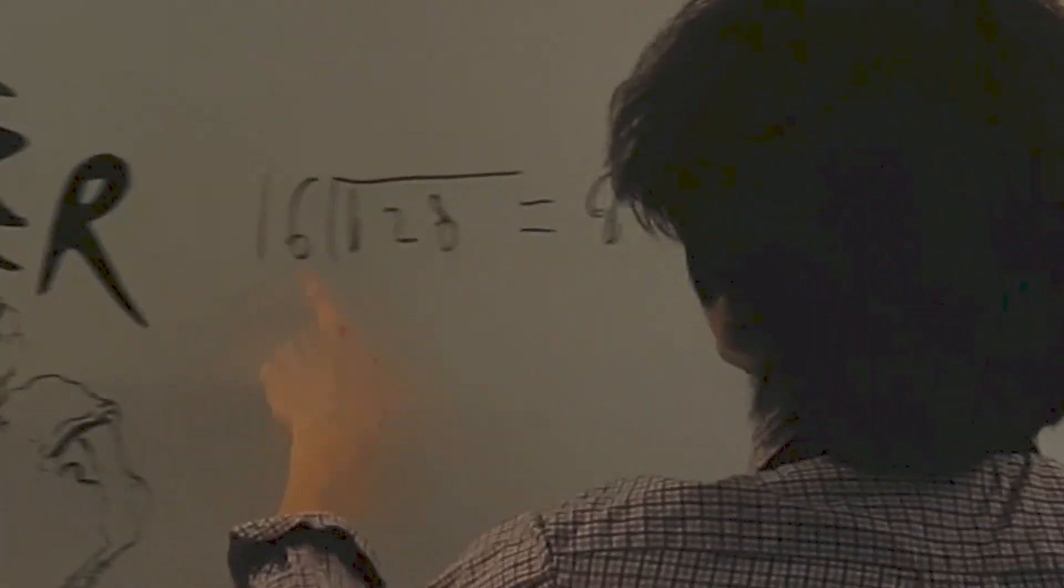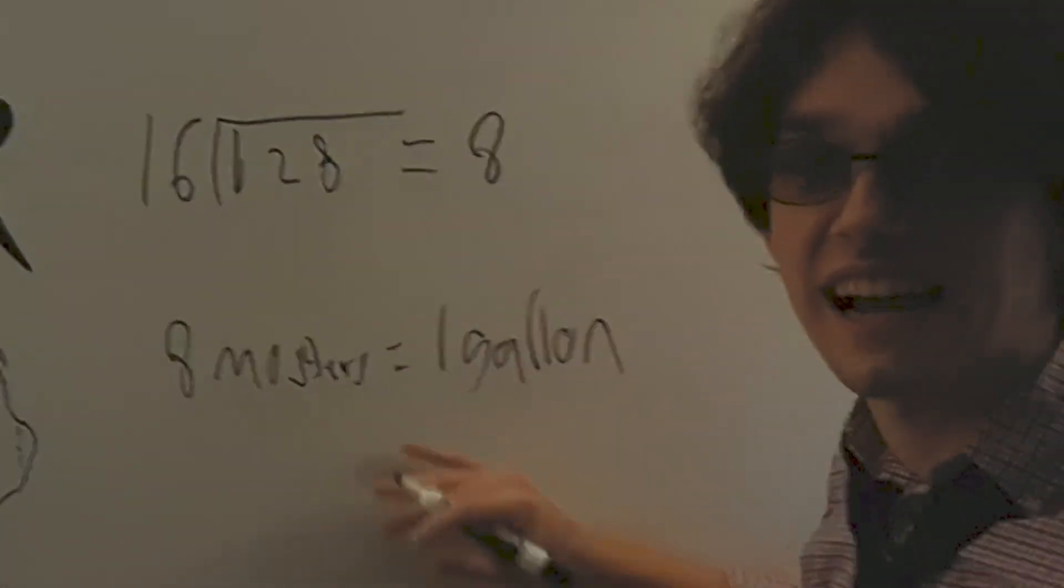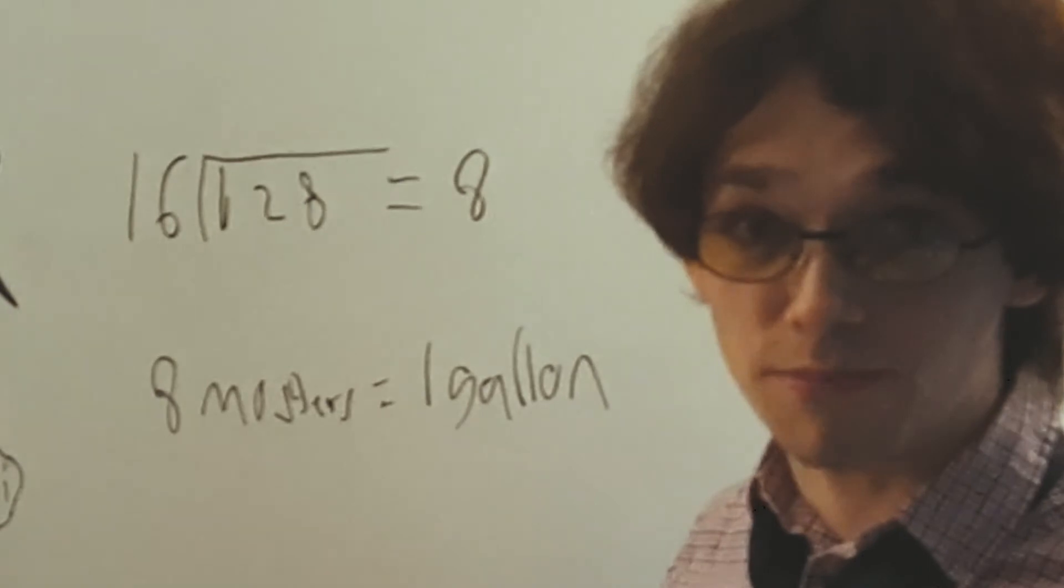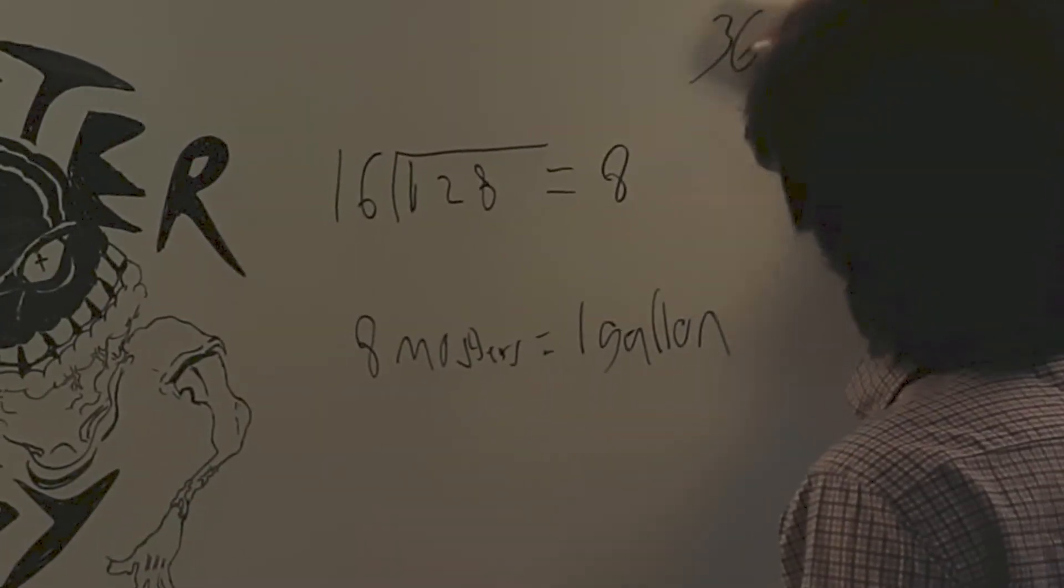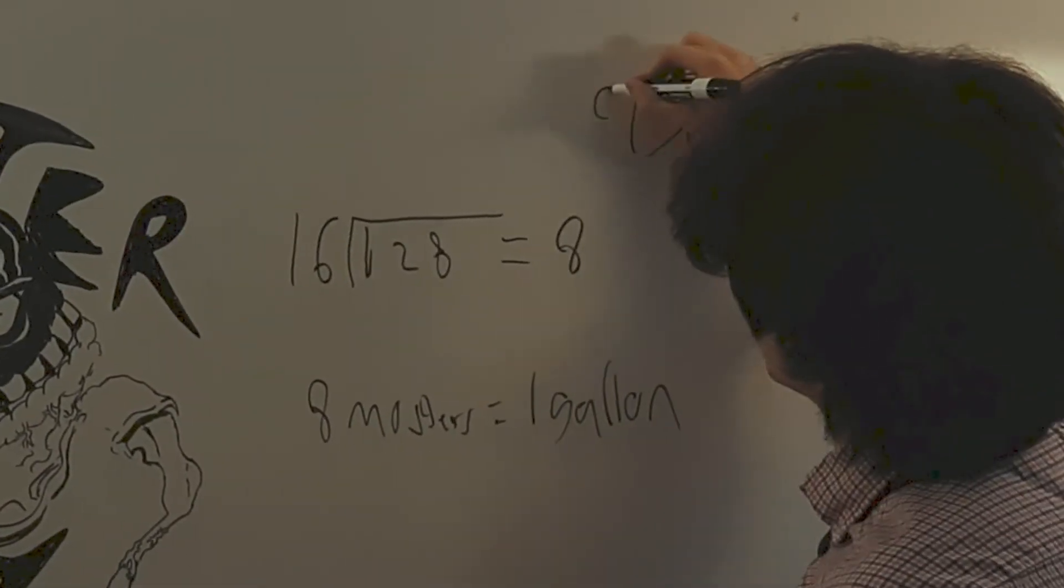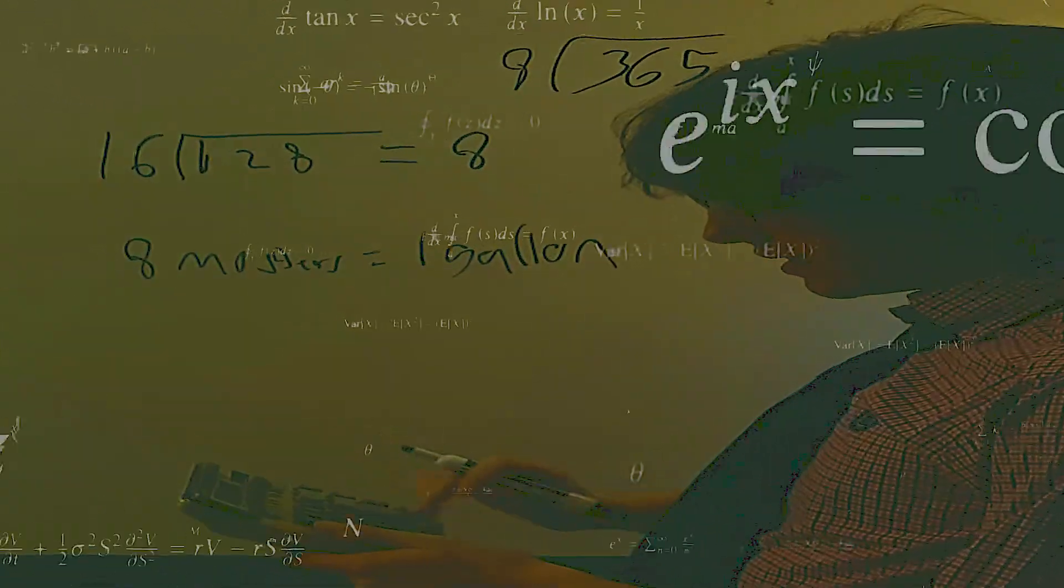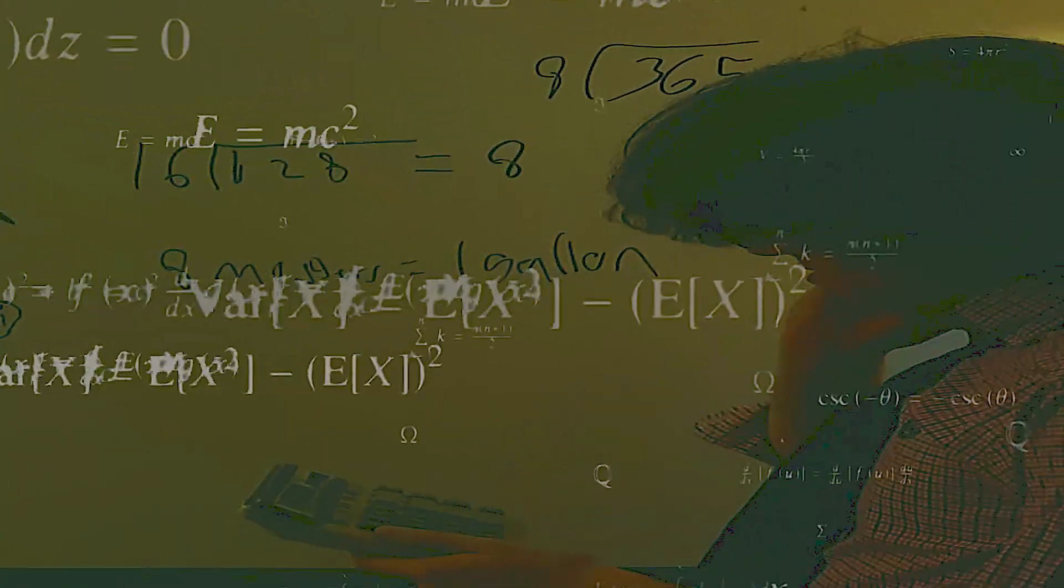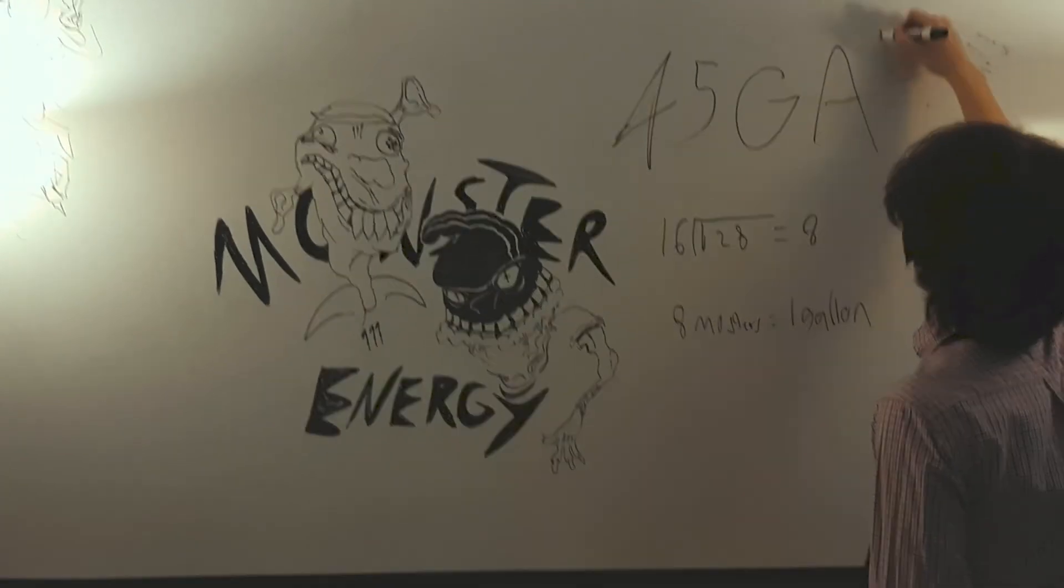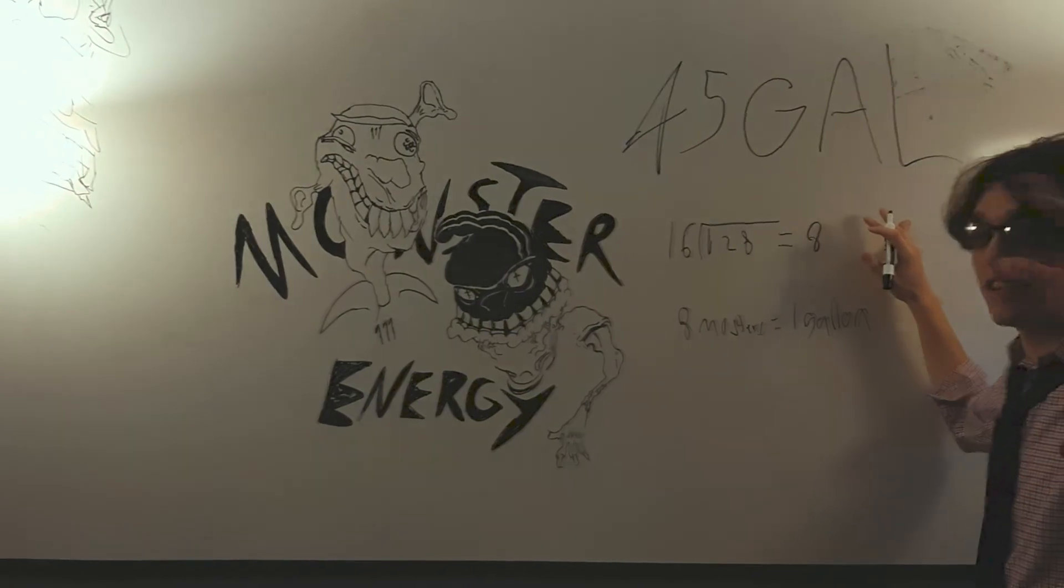So every eight days, I drink a gallon of monster. That's what I was going at here. So let's do this for a year. Let's go 365 divided by eight, of course. 45 gallons. I'm drinking 45 gallons of monster a year.